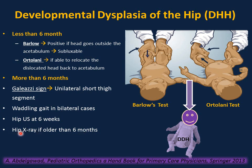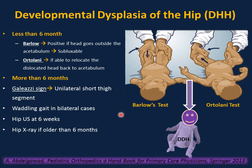Hip X-ray is not helpful if the infant is less than 6 months. Treatment for developmental dysplasia of the hip depends on the age. In infants, splinting or abduction splinting by Pavlik harness for about 6 to 12 weeks. In older children between 6 and 18 months, closed reduction and arthrogram in the operating room with placement of a hip spica cast. In difficult cases, this can be done with open reduction. Early detection and treatment is the key to preventing early arthritis and hip problems.